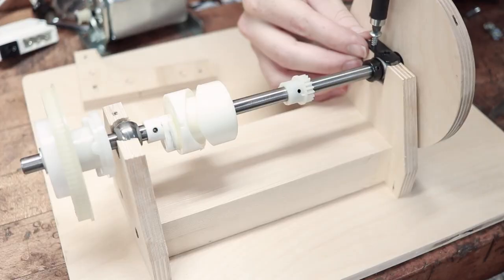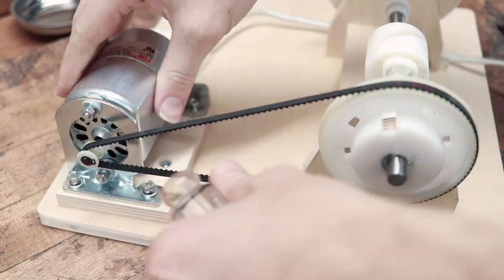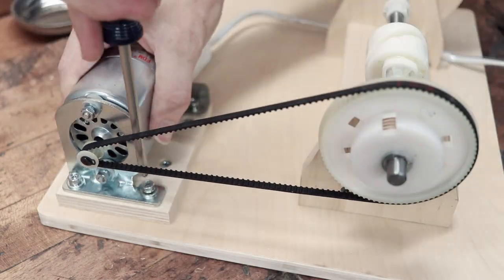So with that sorted out I could screw down the plates that hold the bearings in place and I could screw down my motor making sure that the placement was good for the belt tracking and tension.